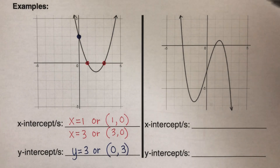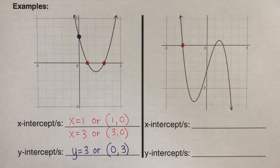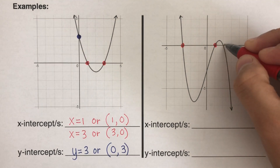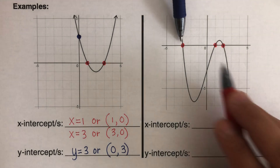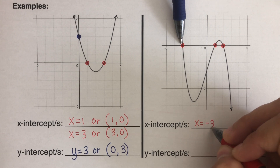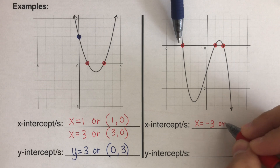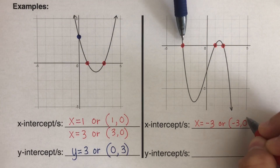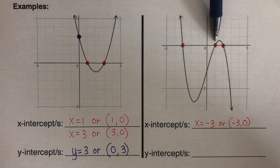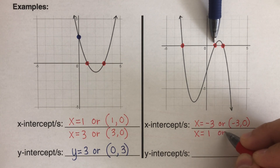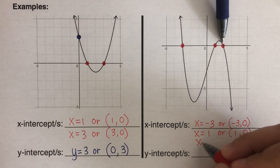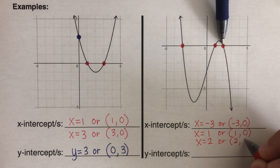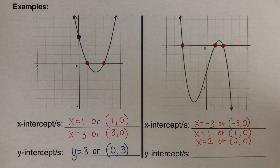Let's move on to the next example and determine the x-intercepts. Here we have three x-intercepts. The first is x equals negative 3, or in coordinate form (-3, 0). The second x-intercept is x equals 1, or (1, 0) in coordinate form. The third x-intercept is x equals 2, or (2, 0). On all three, the x-intercept is the value of x when y is zero.